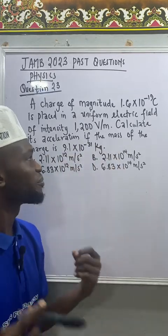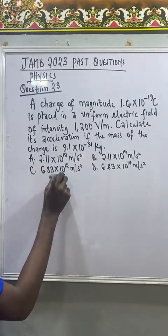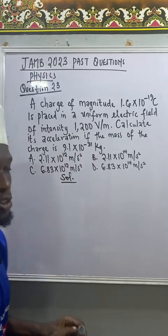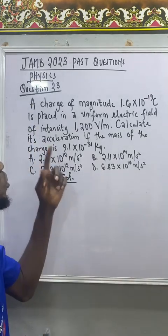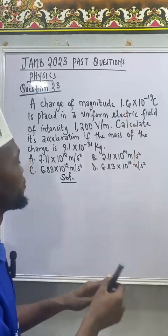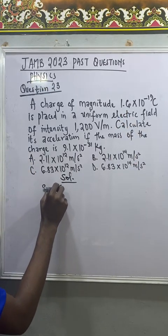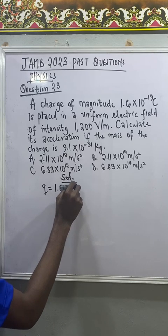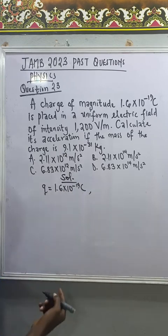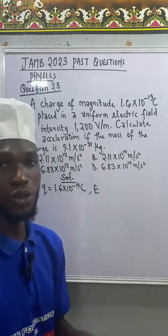Let's go for the solution. First, this question is a good question on electric field. We are given the quantity of charge q which is equal to 1.6 times 10 to the power of negative 19 coulomb, and then we are also giving the electric field intensity which is also known as the electric field strength, so that is giving us 1200 volts per meter.